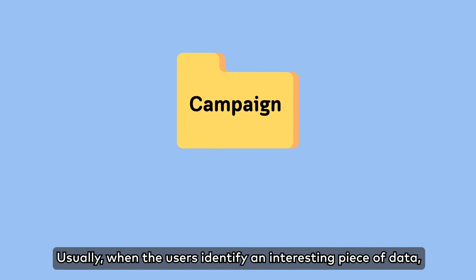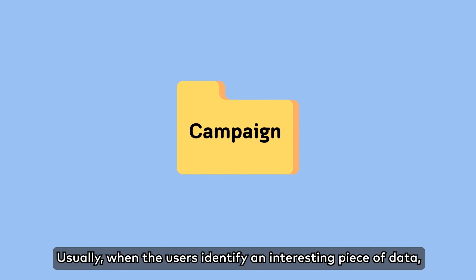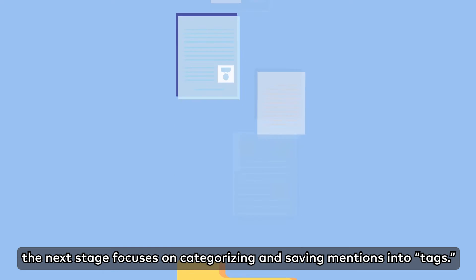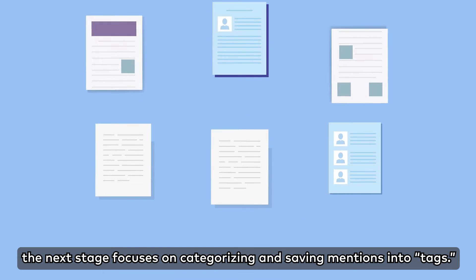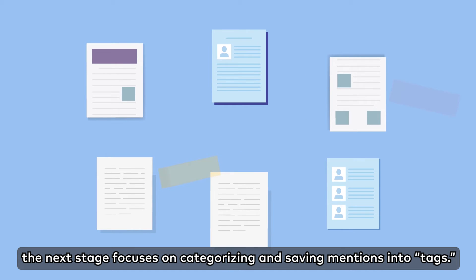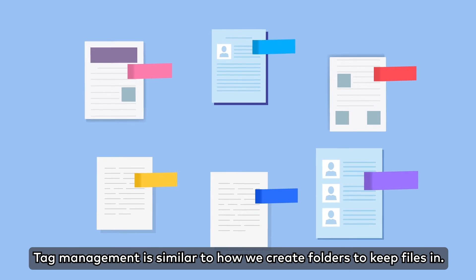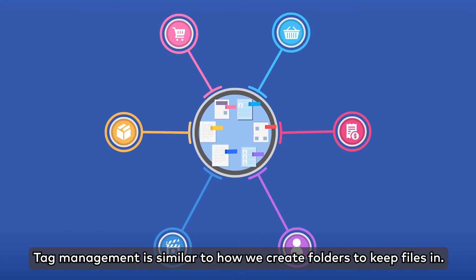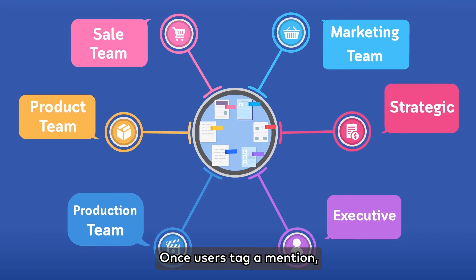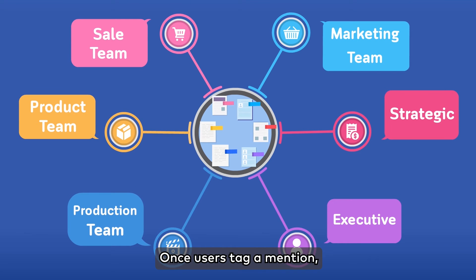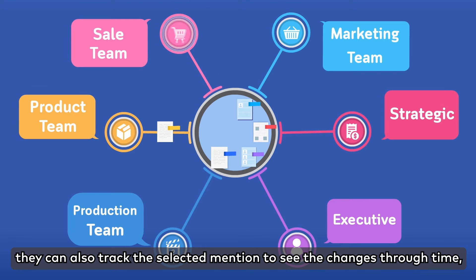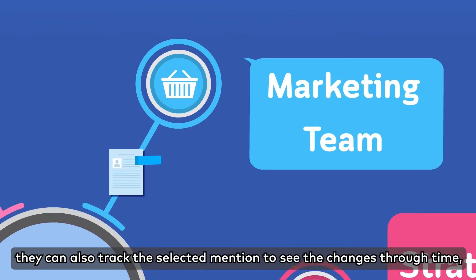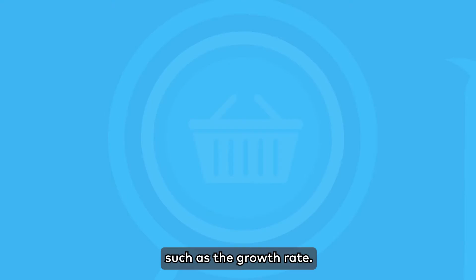Usually when the users identify an interesting piece of data, the next stage focuses on categorizing and saving mentions into tags. Tag management is similar to how we create folders to keep files in. Once users tag a mention, they can also track the selected mention to see the changes through time, such as the growth rate.